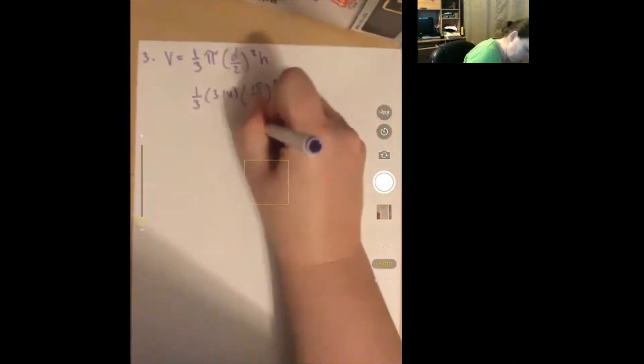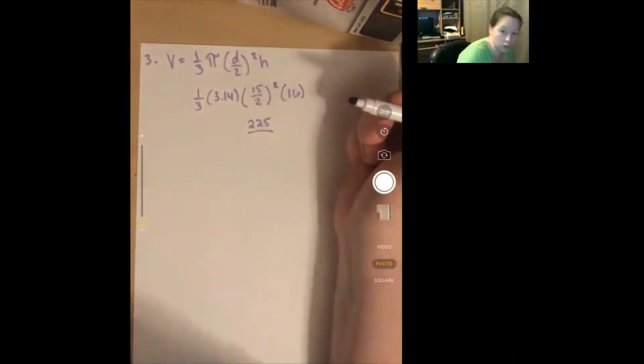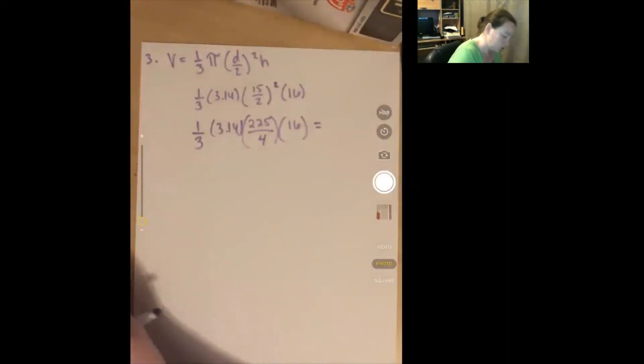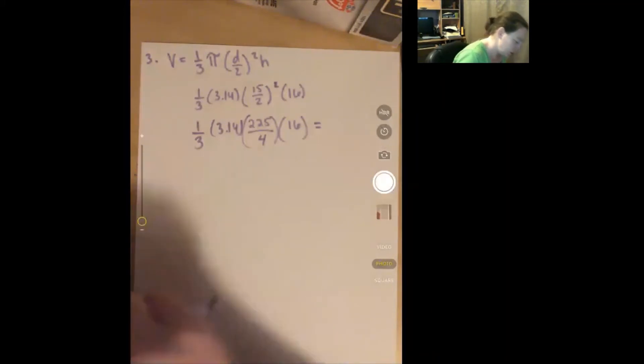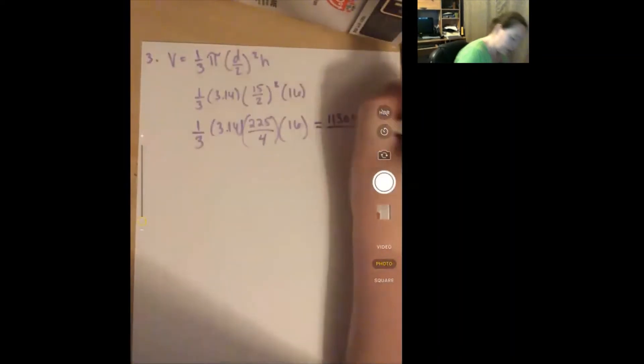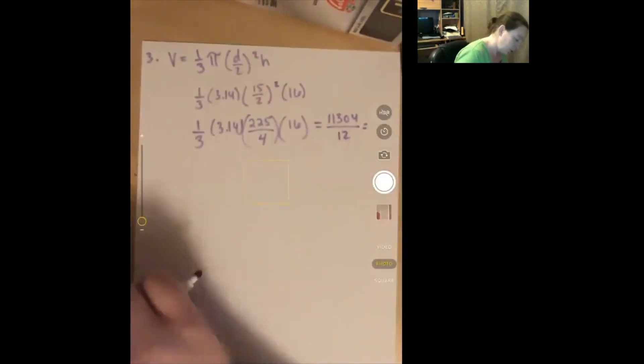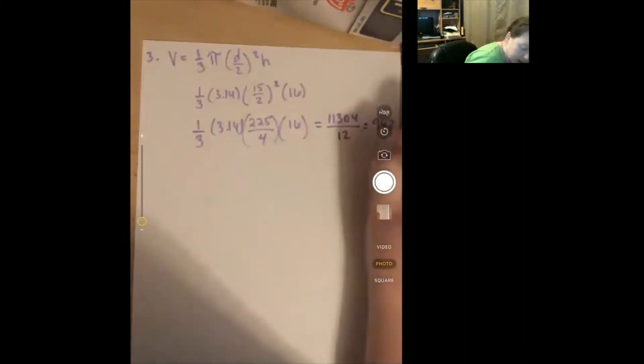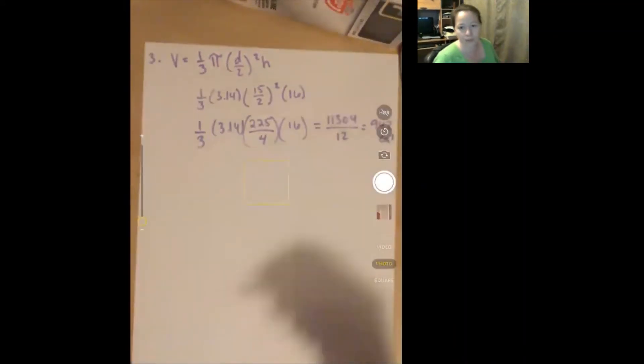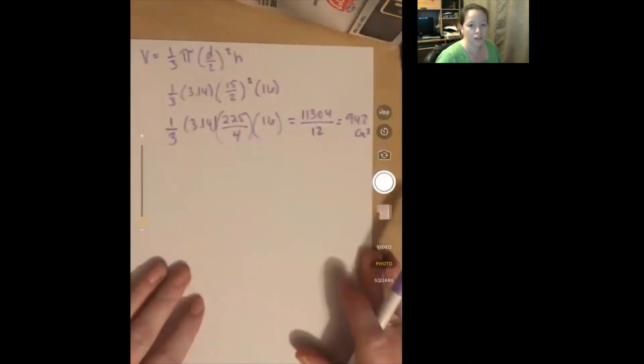Multiplying across the top: 3.14 times 225 times 16 gives 11,304, divided by 3 times 4, which is 12. 11,304 divided by 12 gives 942 centimeters cubed. That's number three.